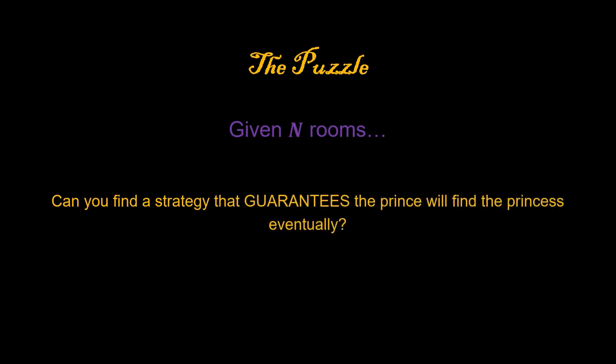Now, the puzzle is that given there are N rooms, can you find a strategy that guarantees the prince will eventually find the princess? If so, what is the least number of nights the prince needs? If you'd like to give the solution a shot, now would be a good time to pause the video.